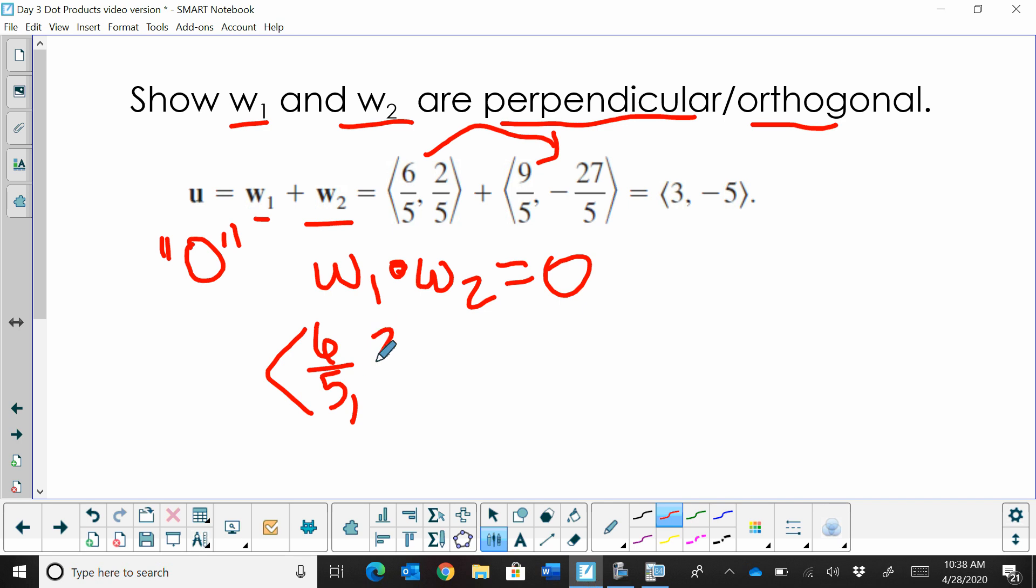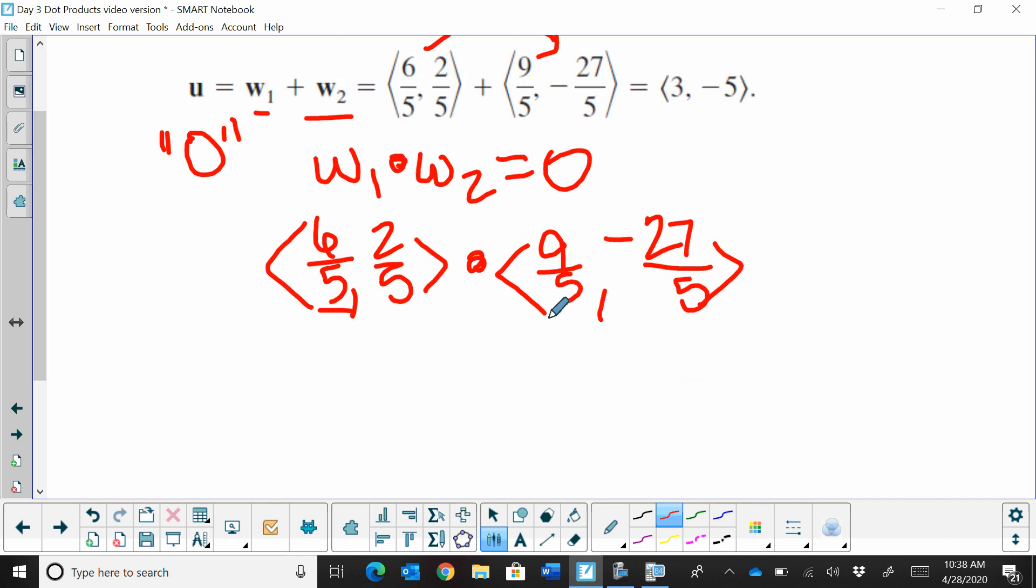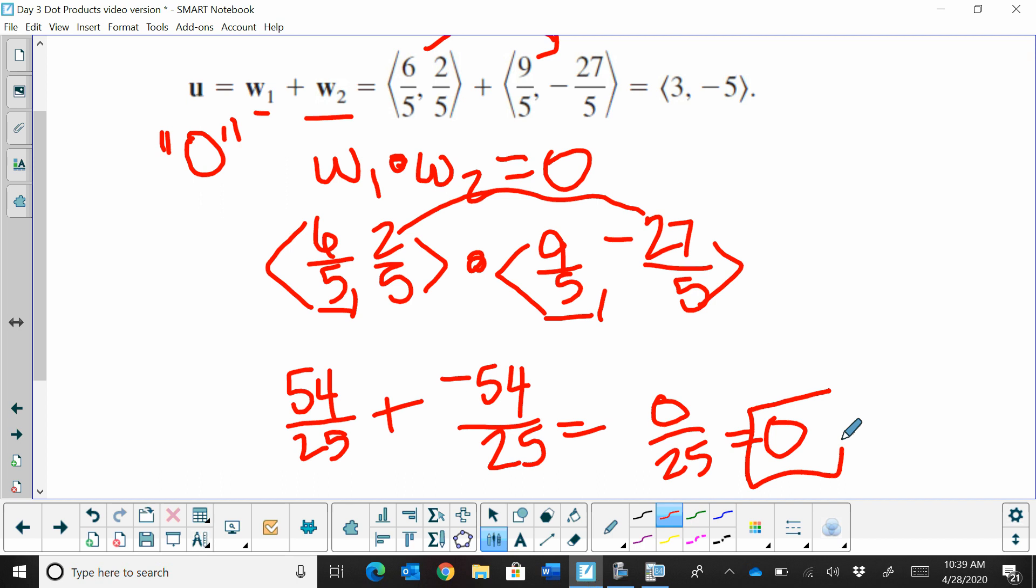So let's write these out. We've got (6/5, 2/5) and we're going to take the dot product with (9/5, -27/5). And dot product, you take your horizontal components and multiply those together. So 6/5 times 9/5, that's going to give us 54/25. And we're going to add to it 2/5 times -27/5, which is -54/25. And yes, indeed, 54 plus -54 is 0 over 25, which is just plain old 0. So there you go. We can then show that they are perpendicular or orthogonal.